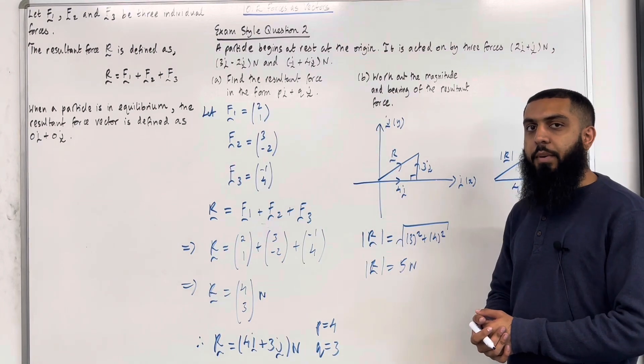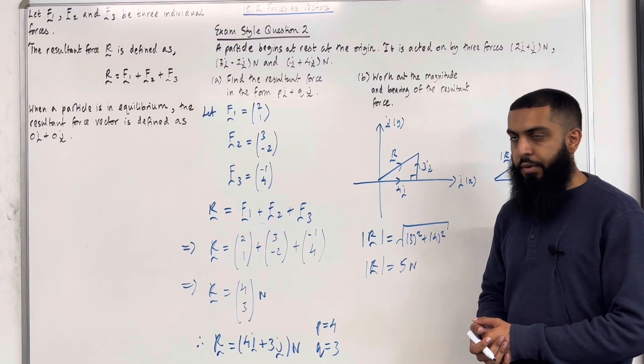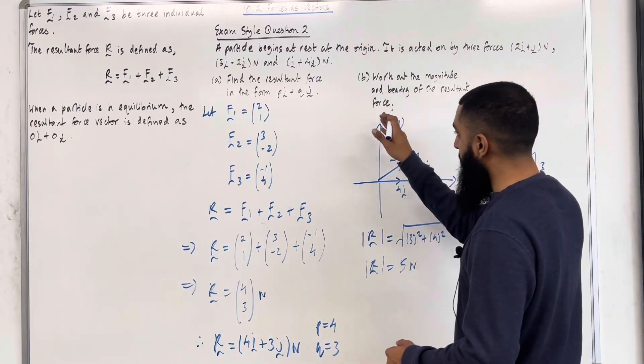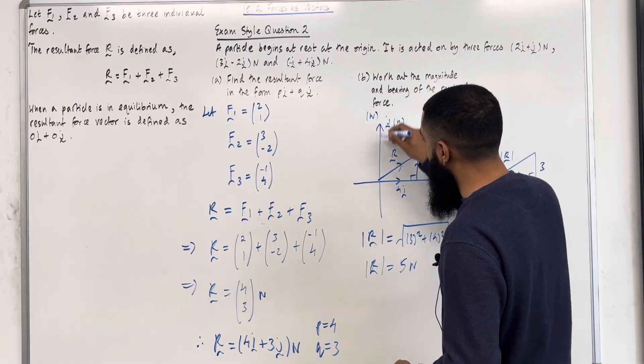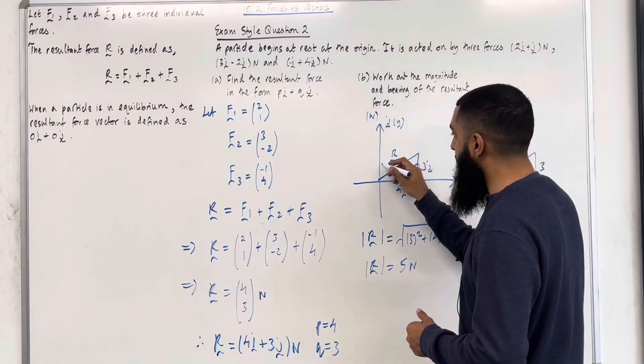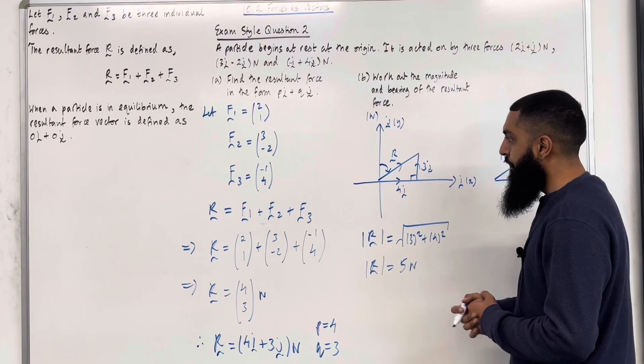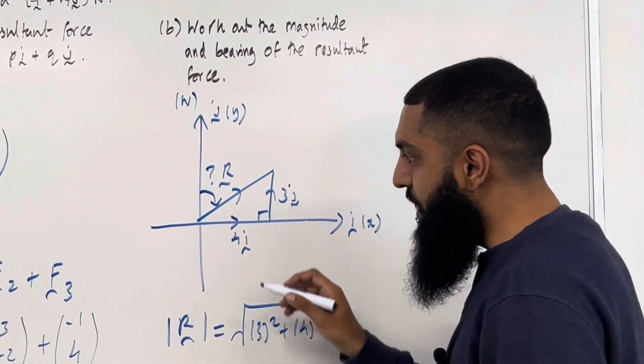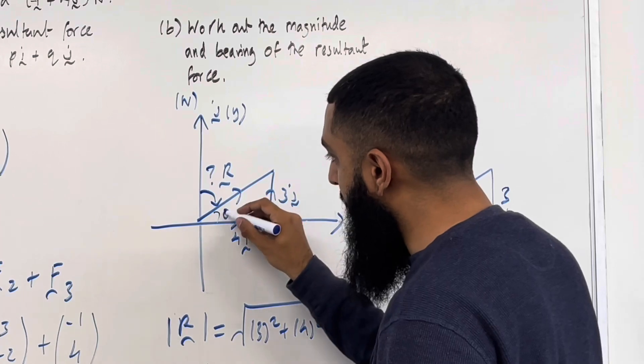Now, I want to work out the bearing of the resultant force, R. How do we work out the bearing? Well, we start from the north line. Okay, so here is my north line, the vertical axis. And then we have to measure the angle going clockwise to that resultant force, R. So, I can put a question mark here. Now, to work out this angle, I need to first work out this angle. Let's call it theta.